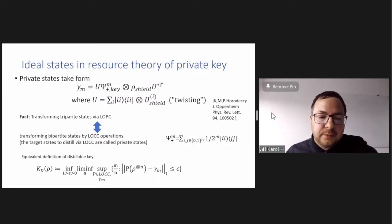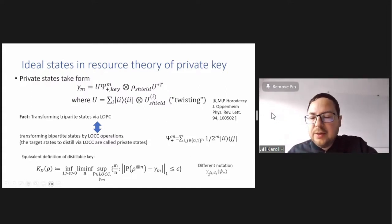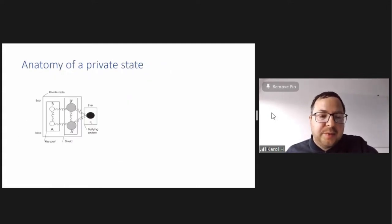And here is the definition of distilling key, it's a bit of a monster. You take P, which is LOPC operation, you take N copies of your state rho, and you want to transform by this LOPC operation, the input state, to something close to a private state, and what matters is the ratio between the key bits M, divided by the N invested copies. So in asymptotic limit, this M over N is distillable key, when we allow error to small error that goes to zero. I will also use a different notation, instead of gamma M for the M key bits, I use notation gamma dk ds, which is dk is a local dimension of the key part, and ds is local dimension of the shield, because it's sometimes convenient.